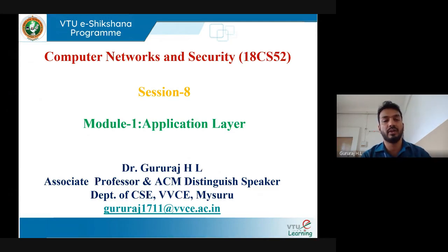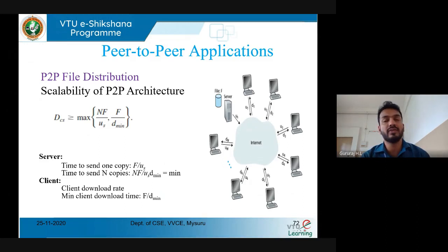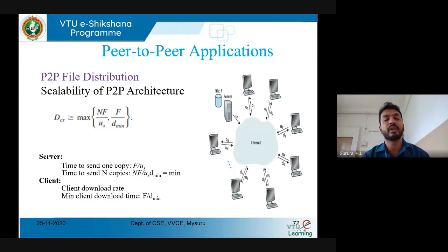In this lecture, we'll see some application-oriented concepts of network architecture. Until now, we discussed the fundamental architecture called client-server. Now we'll discuss one more important application: peer-to-peer. In client-server, multiple clients send requests to one server, which processes and replies back. If that central point fails, the complete network fails. But in peer-to-peer, there is no single point of connection and no centralized server.